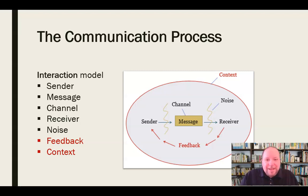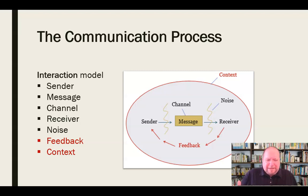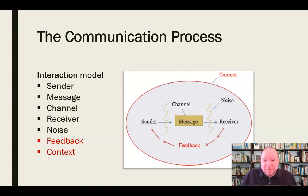The interaction model adds two other important elements. One is what we call feedback. Feedback allows the receiver to respond to the sender as part of that same process. So now instead of shooting an arrow, it's more like a ping pong game — back and forth. Feedback could be verbal, meaning the receiver responds and says yes, no, or whatever. Feedback could also be nonverbal — shaking your head, nodding, shrugging your shoulders, getting a sour look on your face. So feedback can come in the form of words or nonverbal responses, allowing the receiver to send a message back to the sender as part of that same process.